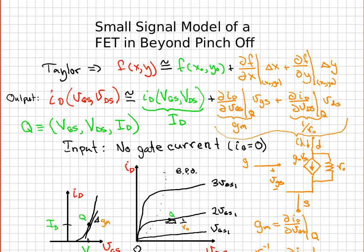For a field effect transistor, the small signal model is based on the Taylor series, as was the case in all the other active devices we've analyzed so far. In this case, we have to use a two-dimensional Taylor series. You can see up here at the top we have an expression for the two-dimensional Taylor series.